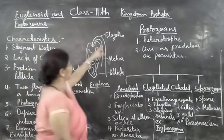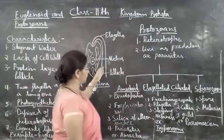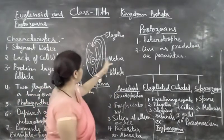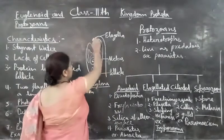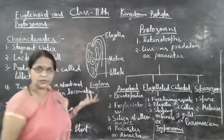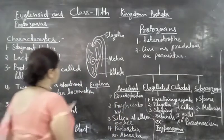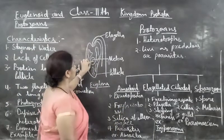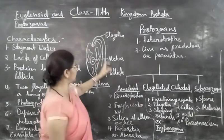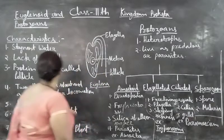Two flagella are present for locomotion. By the flagella, they move from one place to another place. It is a fiber-like structure. This euglenoid is microscopic in nature — without a microscope, you cannot see it. Two flagella are present: one is rigid and the second is soft.